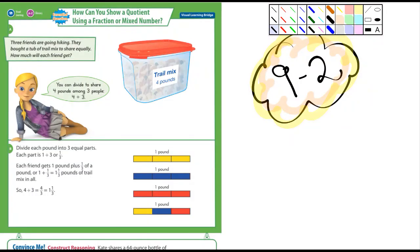Okay, 5th graders, 9-2, and they're talking about fractions again. It says how can you show a quotient, that's an answer to a division problem, using a fraction or a mixed number, and that's exactly, as soon as I turn my music down, what we're going to do.